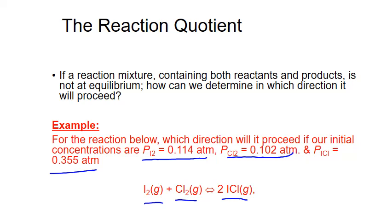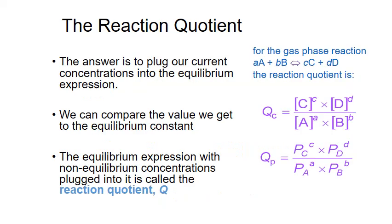If this reaction is not at equilibrium, which direction will it go in order to get to equilibrium? Will we increase products and decrease reactants until we reach steady-state concentrations in the forward reaction? Or will the opposite reaction dominate — decreasing products and increasing reactants until we reach our steady-state concentrations? To answer this question, we need to know where our current ratio of products and reactant concentrations stands compared to our equilibrium constant.